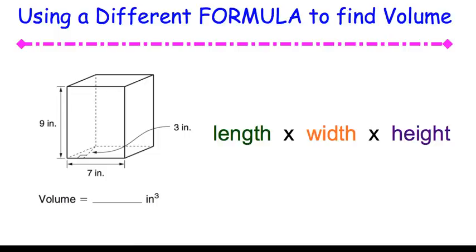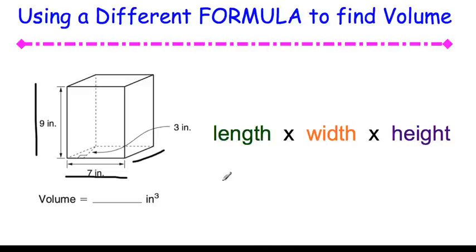Now here's a separate formula that works the same way — write this one down in your notebook too. To find the volume of a rectangular prism, you can simply multiply length times width times height. In this case, this diagram is very easy to understand: length times width times height, so 9 times 7 times 3. If we do the multiplication, that is 189. So 189 inches cubed is the volume of this rectangular prism. Length times width times height.